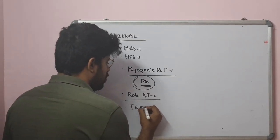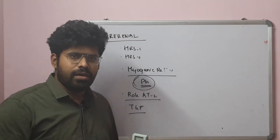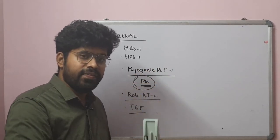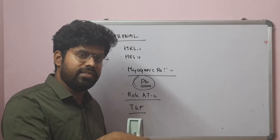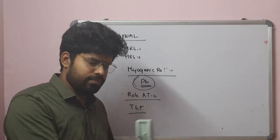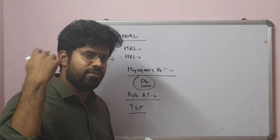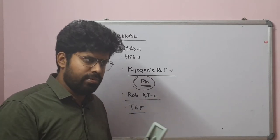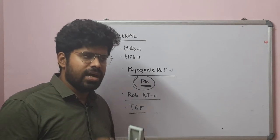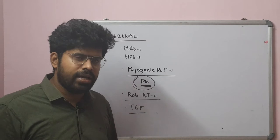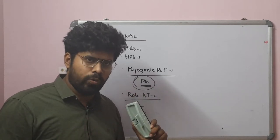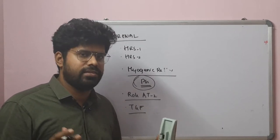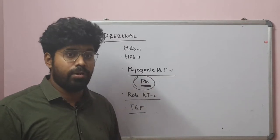The tubuloglomerular feedback: in the distal convoluted tubule there are specialized cells called macula densa cells. These identify increased solute delivery and release adenosine, causing afferent vasoconstriction, and vice versa in the opposite mechanism. This tubuloglomerular feedback protects the kidney against harmful toxins. During activation, patients will have decreased urine output, increased serum creatinine, and electrolyte derangements — all AKI problems occur due to this feedback, though it is a protective mechanism.